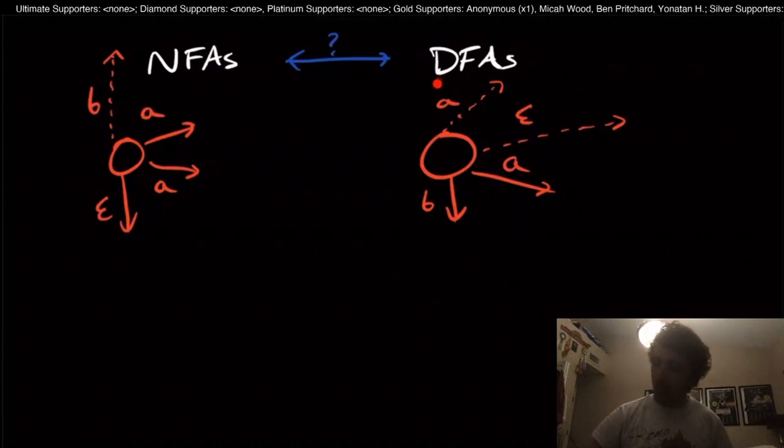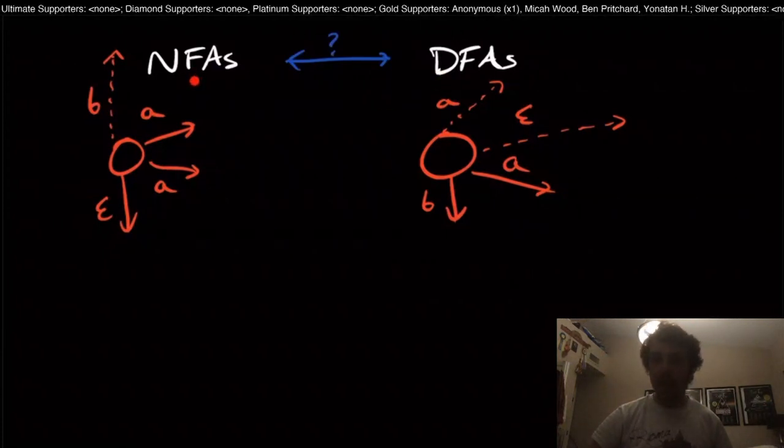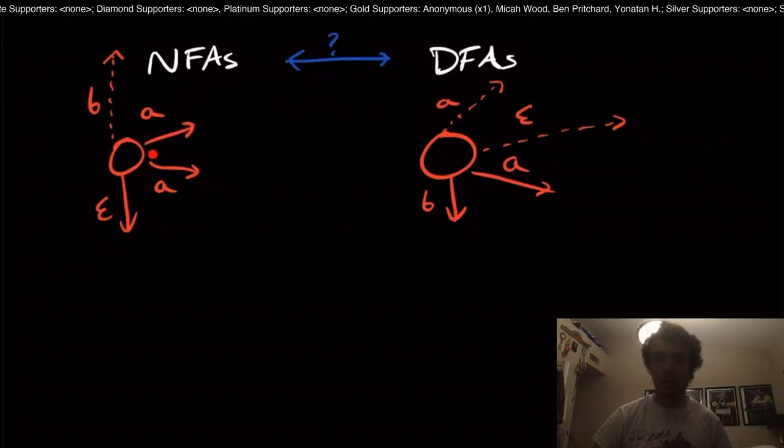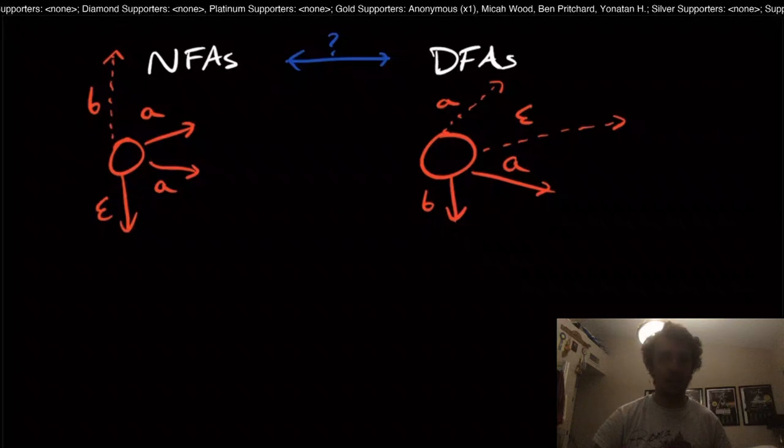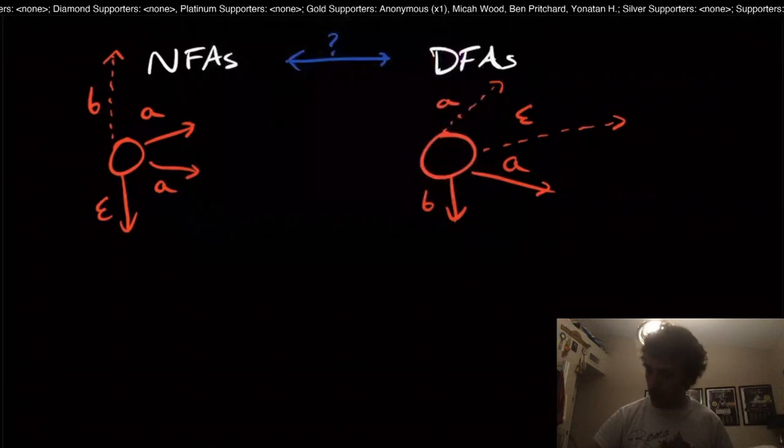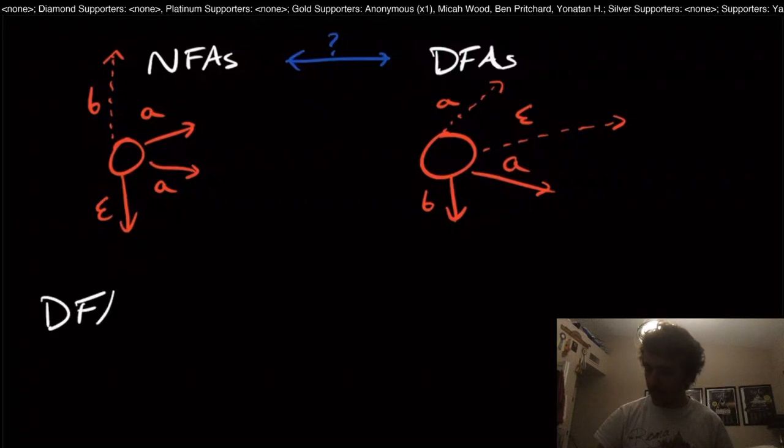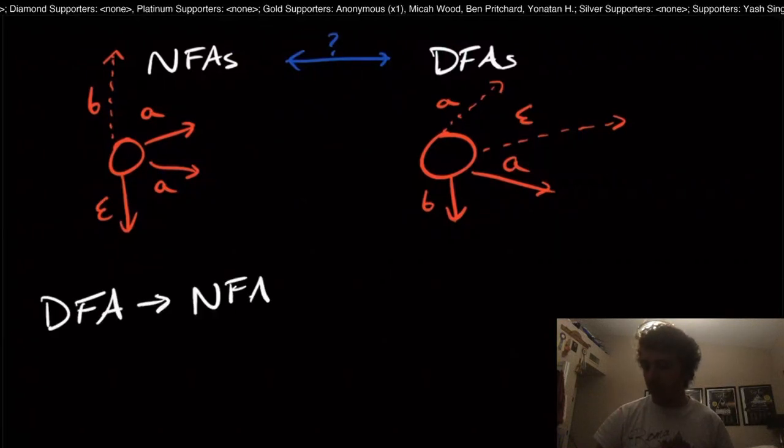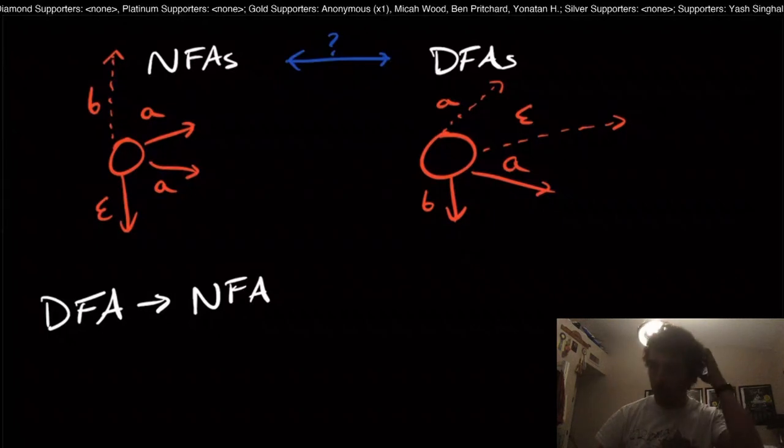Well, clearly, every DFA is already an NFA because the machine doesn't have to be non-deterministic. If it's an NFA, it doesn't have to be, but it's allowed to. So we know that if we have a DFA, we already have an NFA. So that's not too surprising there.